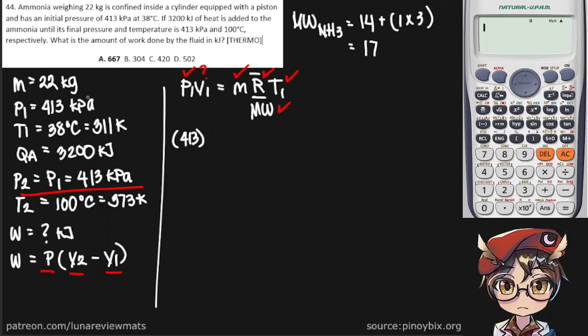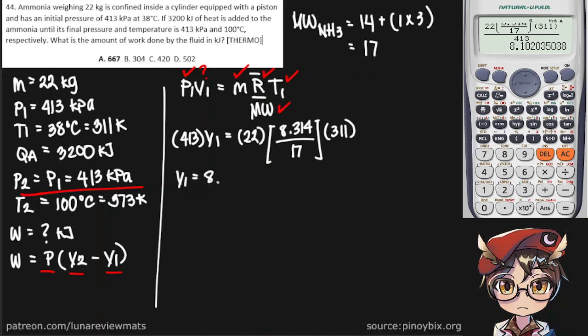Now you can simply put the values in. These are already in the right units, so I won't write them anymore. This constant is 8.314, write that by 17, T1 is 311. OK. So we get a volume of 8.1 cubic meters.